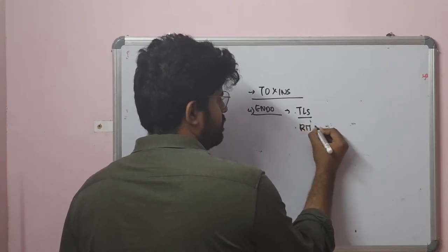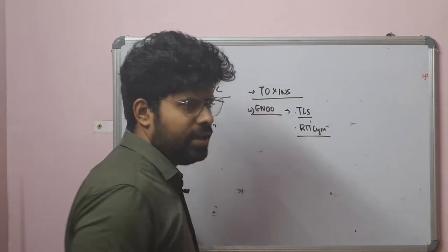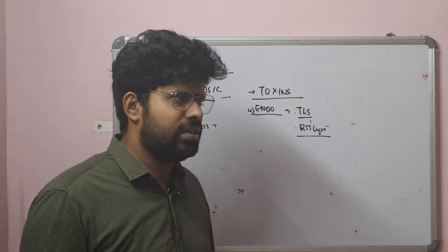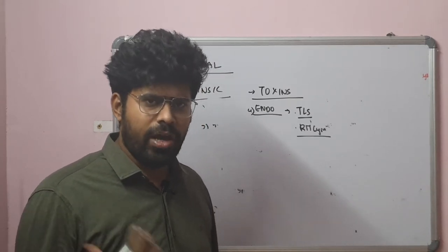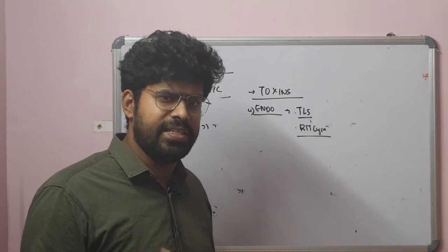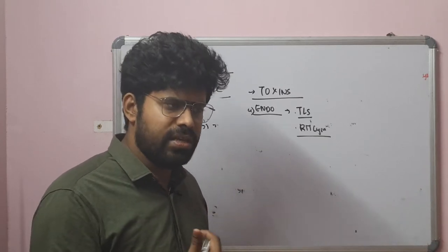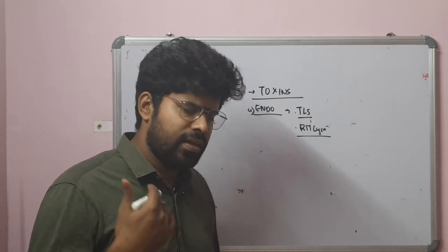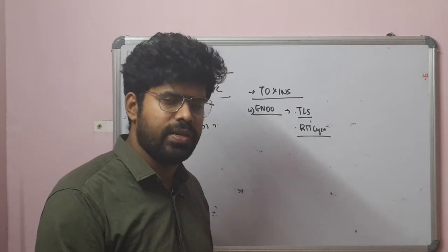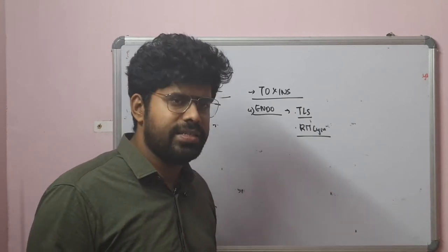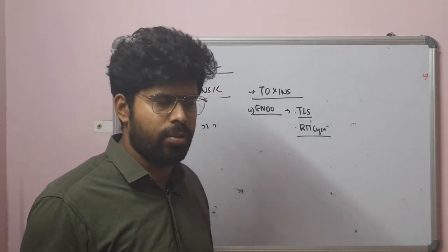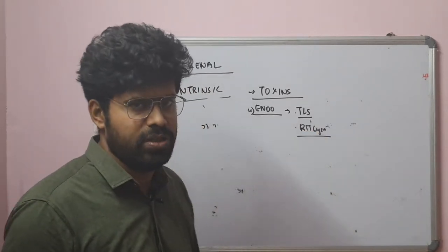Rhabdomyolysis: following trauma, crush injury, electric shock injury, or significant muscle damage, there is release of myoglobin. Similar to tumor lysis syndrome, there will be increased CK-MB, acute onset muscle pain, decreased urine output, increased uric acid, hyperkalemia, increased phosphorus, and decreased calcium. Rhabdomyolysis can be treated with aggressive hydration plus urinary alkalinization with sodium bicarbonate. If nothing works, dialysis must be offered.